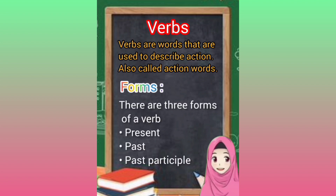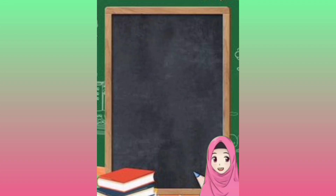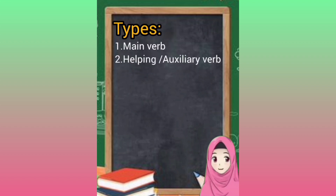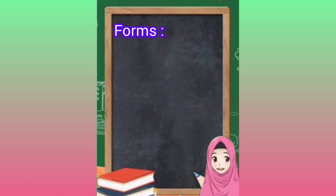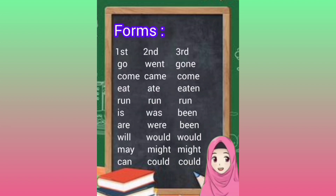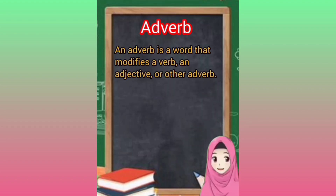Types of verbs: main verb and helping/auxiliary verb. Main verb examples: go, come, eat, run. Helping/auxiliary verbs: is, are, will, may, can. Three forms — go/went/gone, come/came/come, eat/ate/eaten, run/run/run. Auxiliary forms: is/was/been, are/were/been, will/would, may/might, can/could.